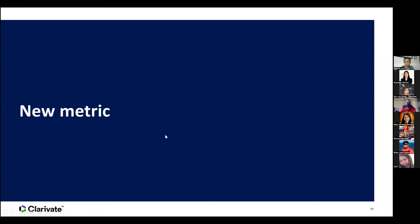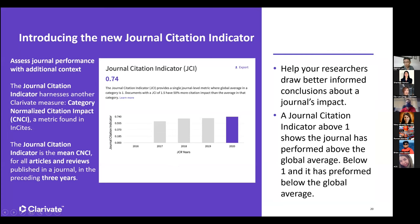The next part is about the new metric — the Journal Citation Indicator. It is the average of the CNCI of every article in that journal, taking CNCI of all articles and reviews published in the preceding three years and averaging them out. The Journal Citation Indicator above one shows the journal has performed above global average; any number below one means it has performed below global average. For example, 0.74 means this journal is performing below global average. Together with the journal impact factor, it becomes easier to identify those performing very well — meaning high impact factor and performing above global average.